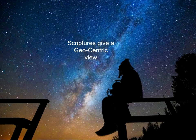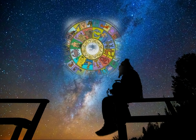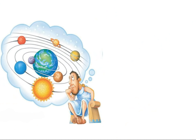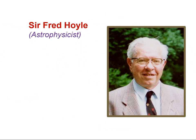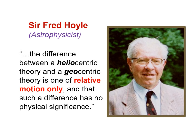Now, all Vedic scriptures give a geocentric, earth-centric view of the universe, perhaps because it's organically related to the science of astrology. The earth being seen as the centre was a long tradition. It wasn't until the time of Copernicus that the sun was placed at the centre of the solar system. Sir Fred Hoyle writes that the difference between a heliocentric and a geocentric theory is one of relative motion only, and such a difference has no physical significance in space.